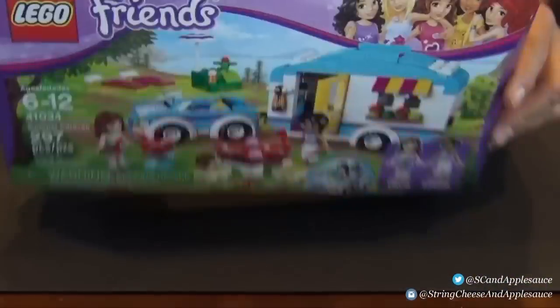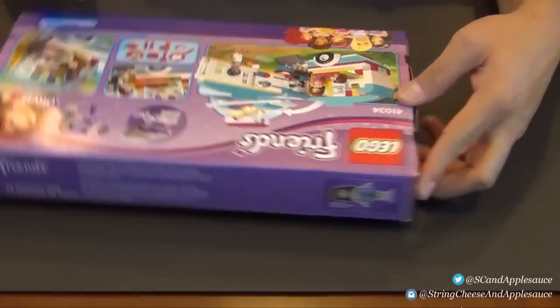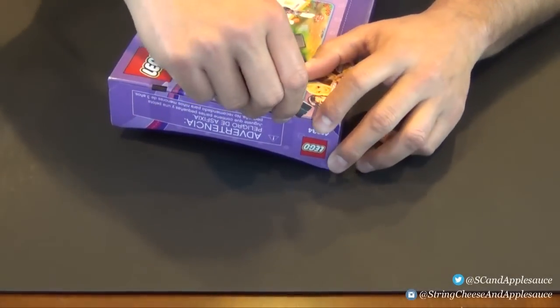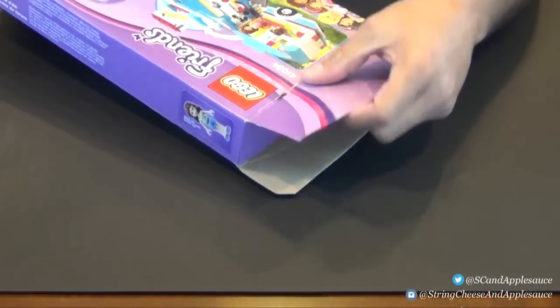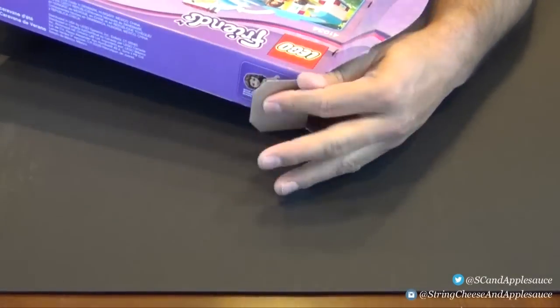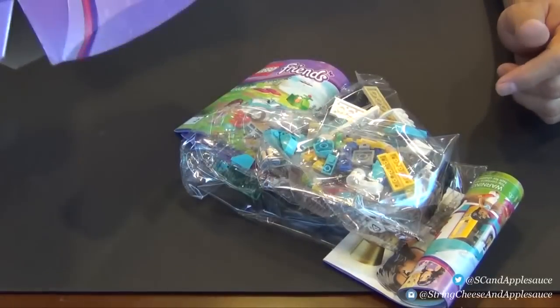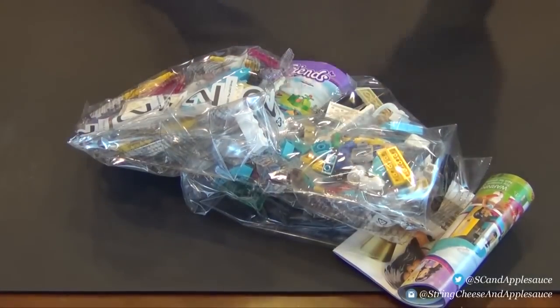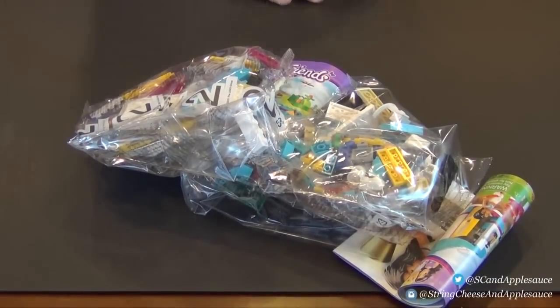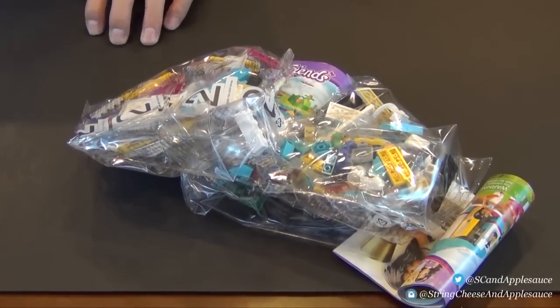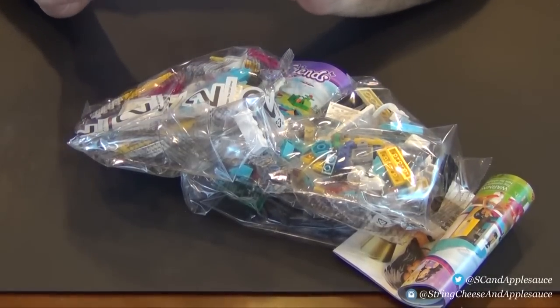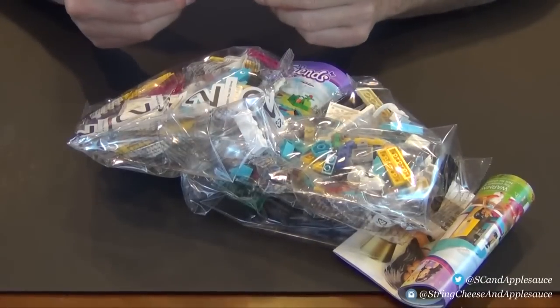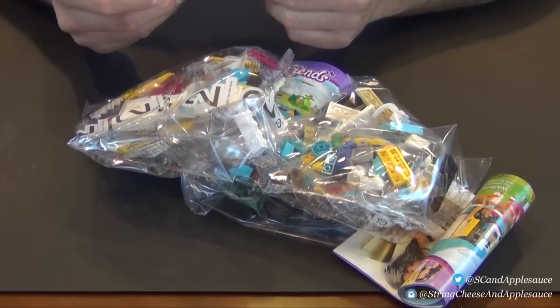Here it is, the Friends Summer Caravan. Let's unbox this and see what is inside. Let's see how bad our instruction books are wrinkled up and how many sticker sheets are in here. There's the contents and our sticker sheet did go flying off to the side, it's on the floor. Getting it off the floor, I'm here, I'm back.